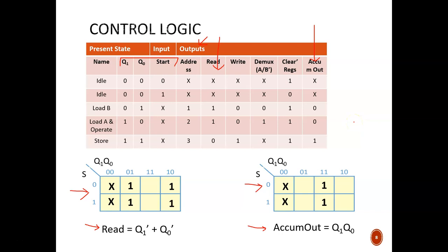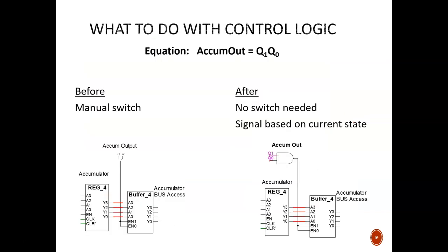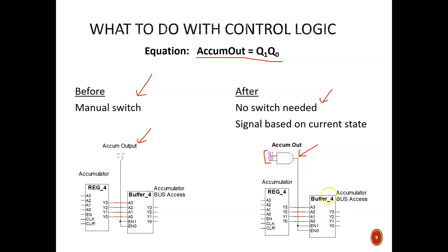This is where we see the whole point of the control module. The equation for the accumulator output is Q1 AND Q0. Before, I needed a manual switch to tell the accumulator when it could access the data bus. Now that switch is replaced with a simple AND gate performing Q1 AND Q0. As long as we know what state we're in, that state tells us when the buffer should allow data to pass through. Instead of manual control, we now have automatic control.